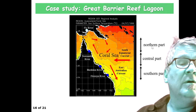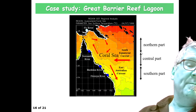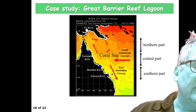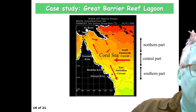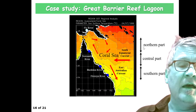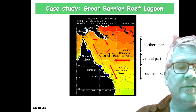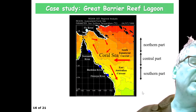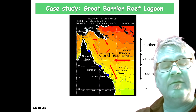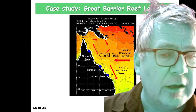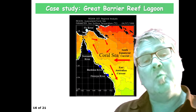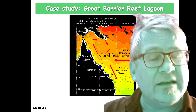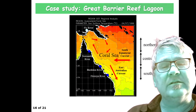Here we talk about the northern part. The blue dots are actually key rivers — river sources in this area. We talk about the northern part, the central part, and the southern part of the Great Barrier Reef, to see whether all these regions behave the same way or whether there are differences in temperature-salinity seasonal cycles.